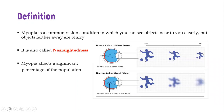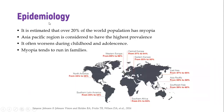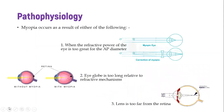Myopia affects a significant percentage of the population. It is estimated that over 20% of the entire world population has myopia. However, the prevalence varies from continent to continent, with Asia Pacific having the highest prevalence, with close to 50% of the population suffering from myopia. It often worsens during childhood and adolescence, and it commonly runs in families.